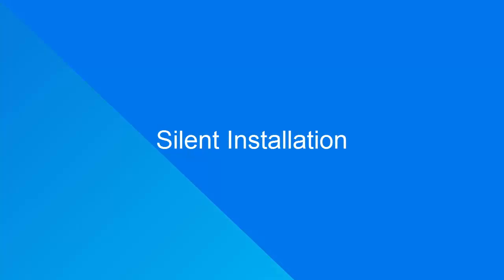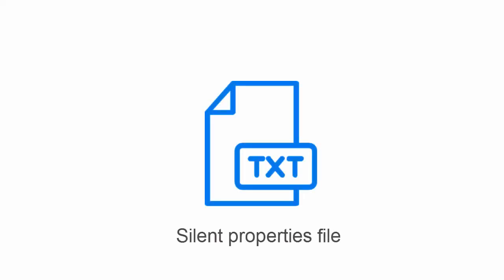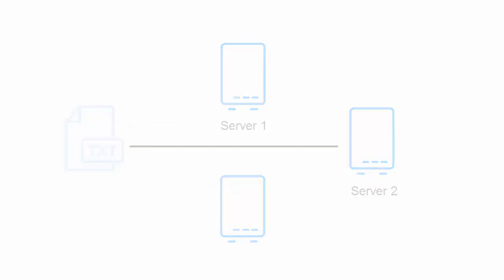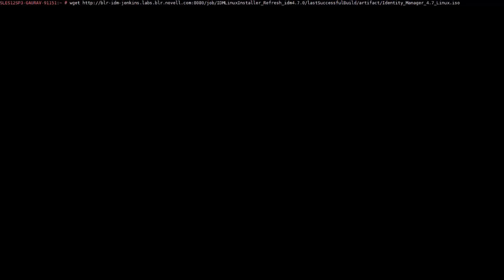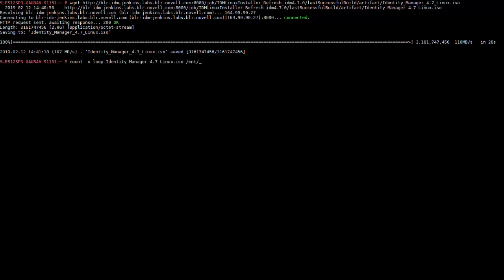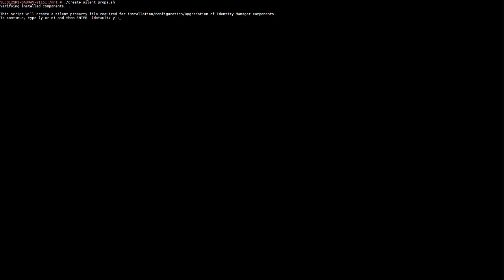Let us perform a silent installation of Identity Manager components. The silent installer allows you to create a silent properties file using a script. The silent properties file can be used to run a silent installation on different servers in your environment. Download the Linux ISO on a computer where you want to install Identity Manager and mount the downloaded ISO. To create a silent properties file, run the createSilentProps script from the location where you have mounted the Linux ISO.